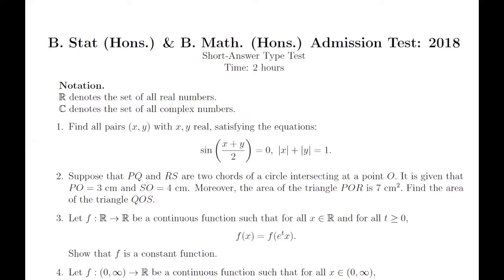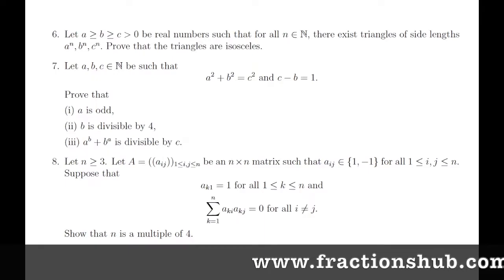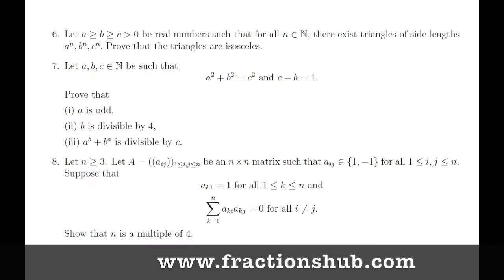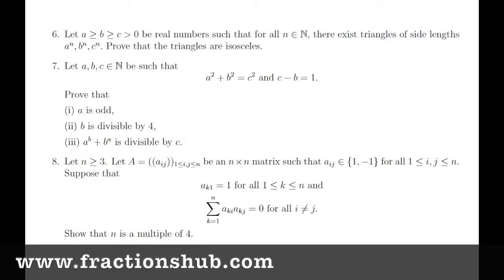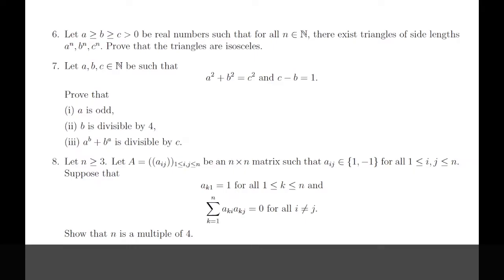Hello everyone, welcome to another video of the 2018 B stat B math series. Here we'll be discussing problem number seven, which says: you have A, B, C to be three natural numbers such that a² + b² = c² and c - b = 1. The first part asks you to prove that a is odd, the second part that b is divisible by four, and the third part that a^b + b^a is divisible by c.